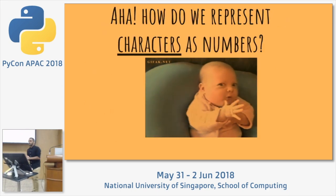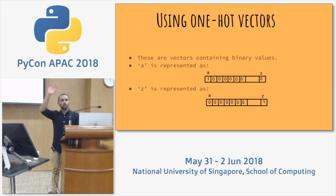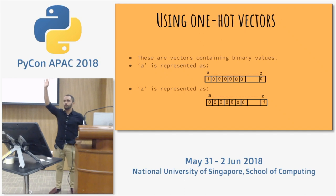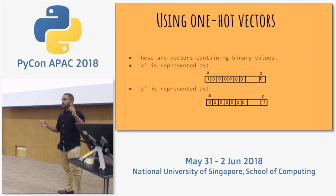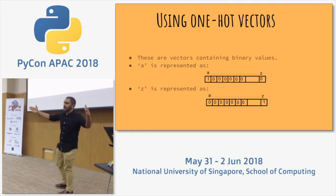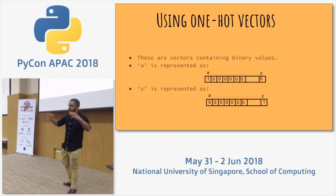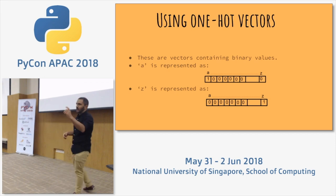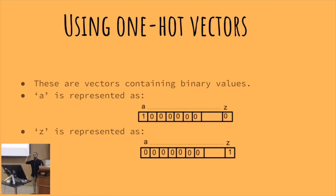We've represented words as numbers. How do we represent characters as numbers? Use one-hot vectors. A one-hot vector is a vector of zeros where just one digit is set to one, and which column is set to one depends on the character it represents. Assuming a 26-character space, the vector for 'A' has everything zero but the zeroth index set to one; 'B' has the first index set to one; 'Z' has the 25th index set to one.